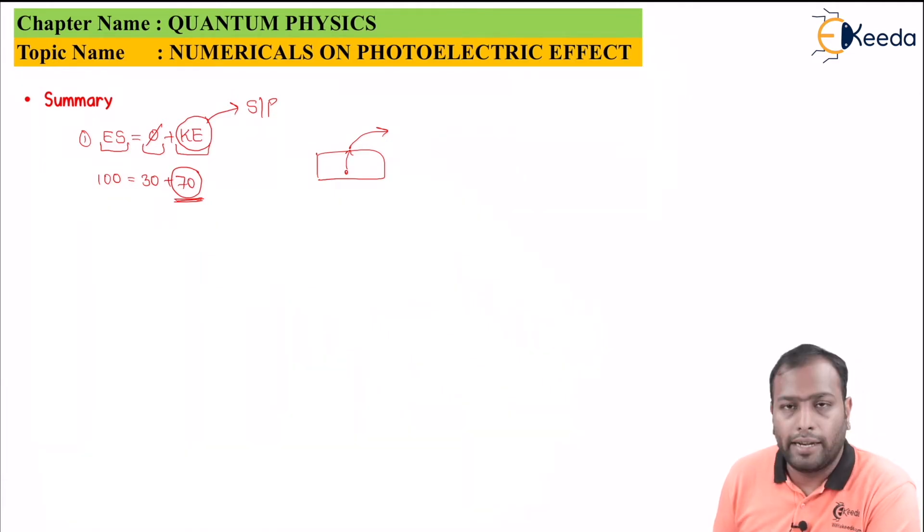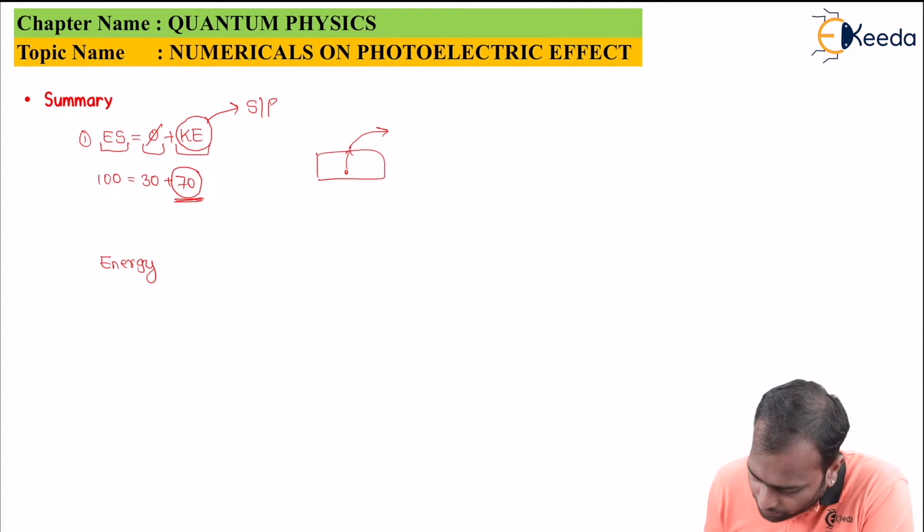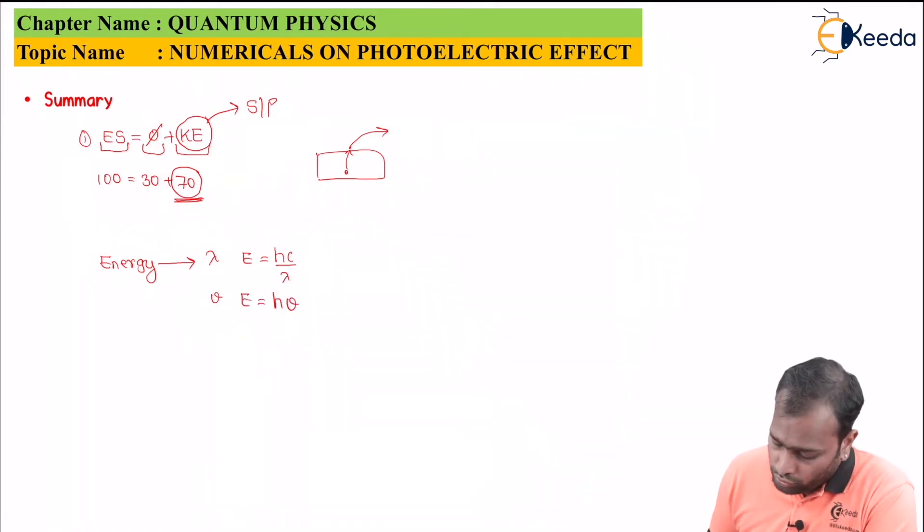Now let's get into the crux of energies. Now an energy can be given by two ways. First you will be given as lambda and second you could be given as nu. If your lambda is given then you can say your energy is equals to hc by lambda. So basically if you are given lambda you can find energy by using this formula. If you are given nu you can find energy by using E equals h nu.